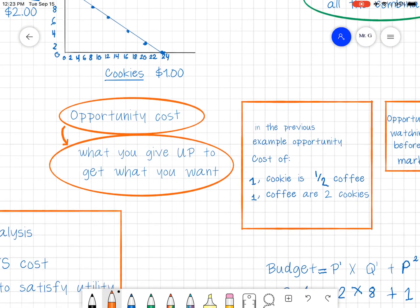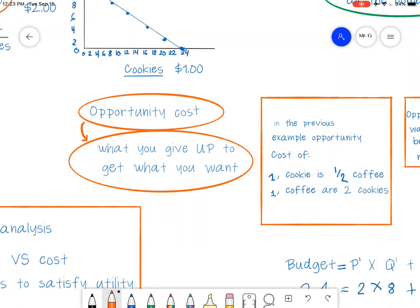If we look at this, it brings up the whole idea of opportunity cost. Now, opportunity cost is a very important concept. Opportunity cost is what you give up to get what you want. And you're like, okay, that's nice. But what does this all mean?